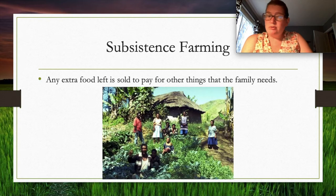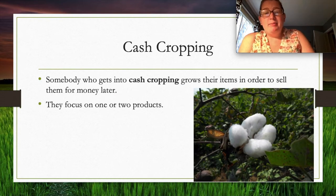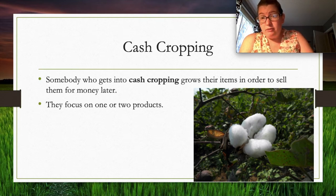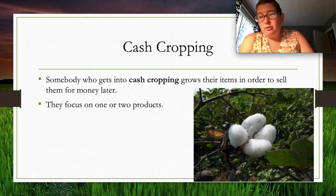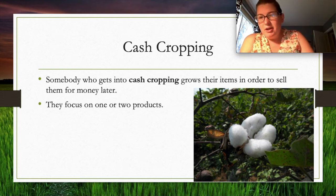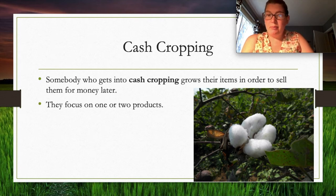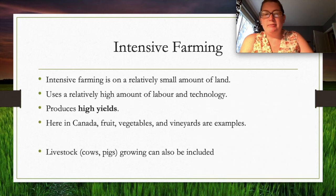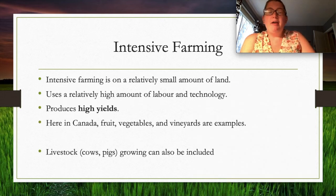Cash cropping is specifically done to make money. You typically farm one type of product — or maybe two — and sell it for profit. A great example is cotton: you grow it and it's turned into fabric. Cash cropping means producing a large quantity of one thing to sell for money.